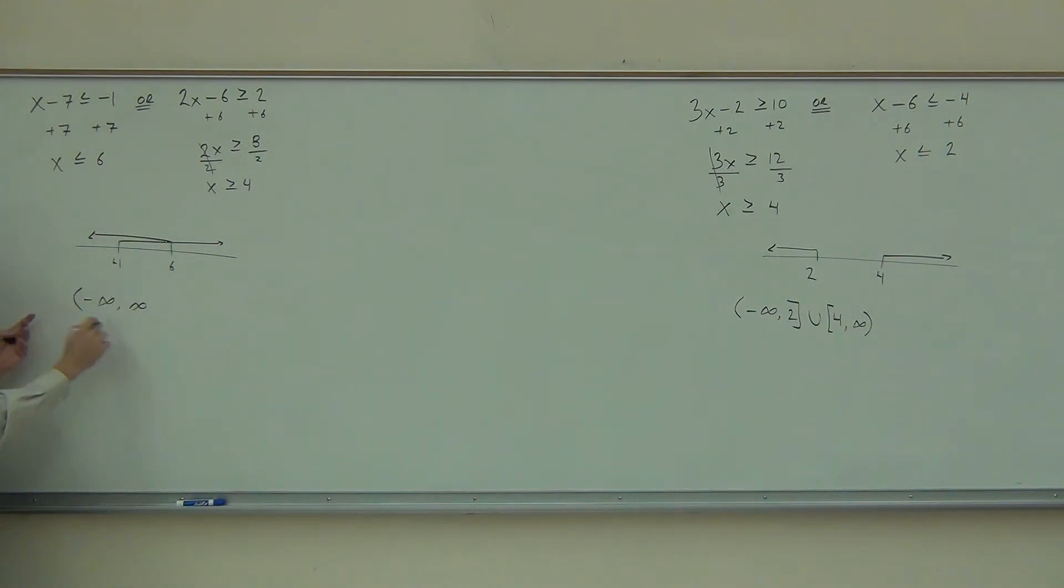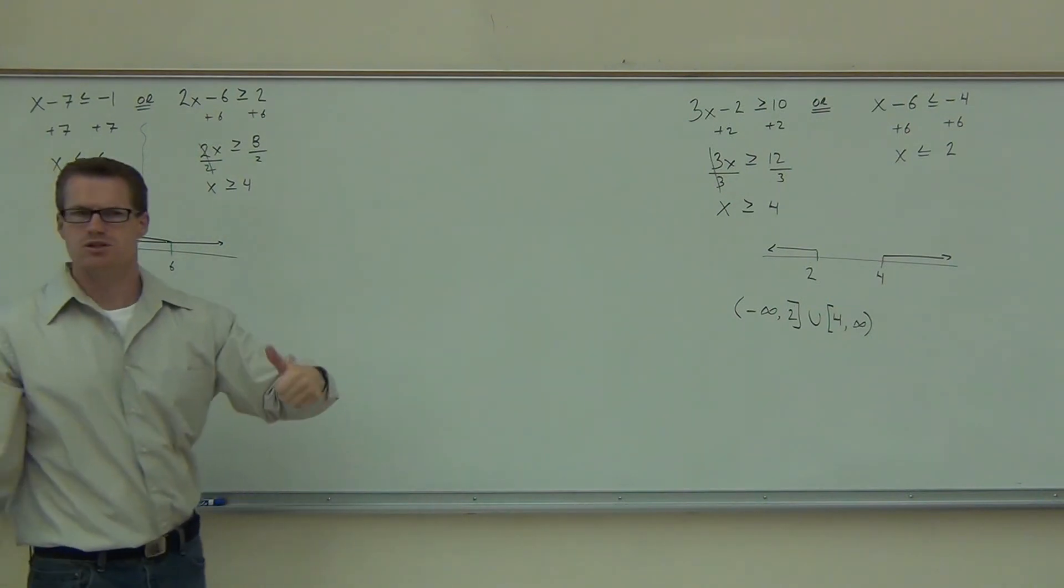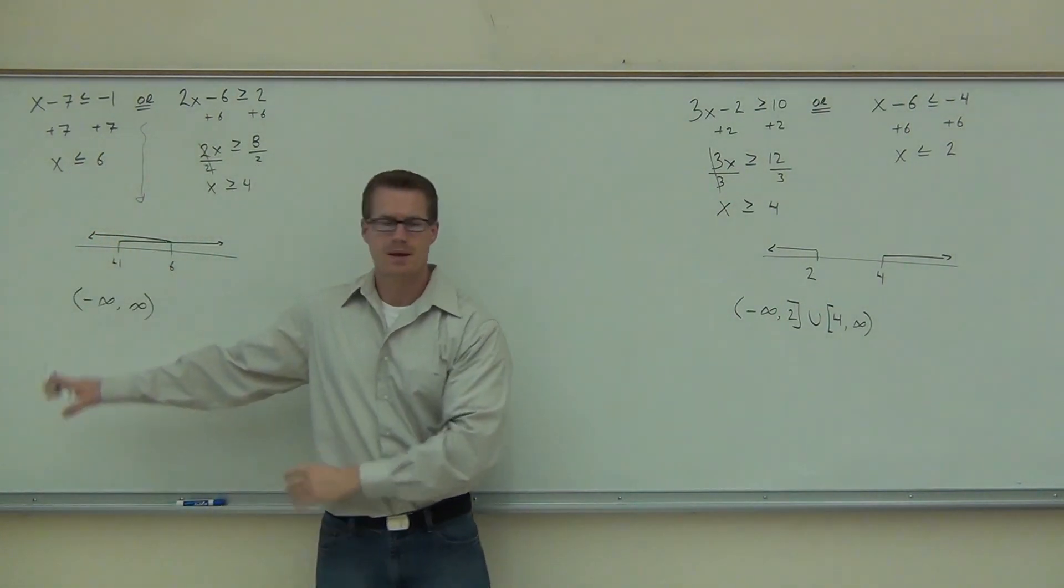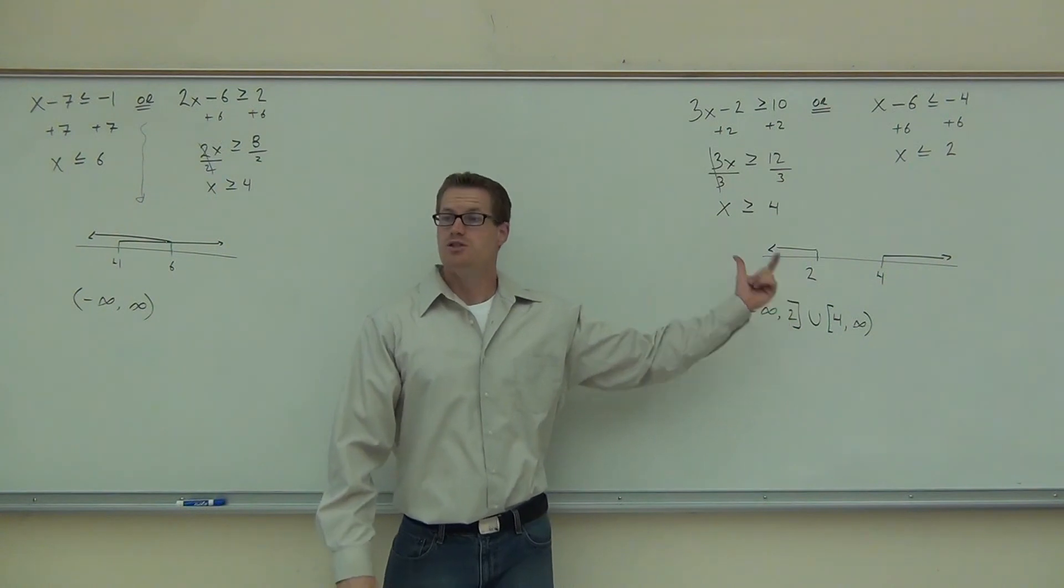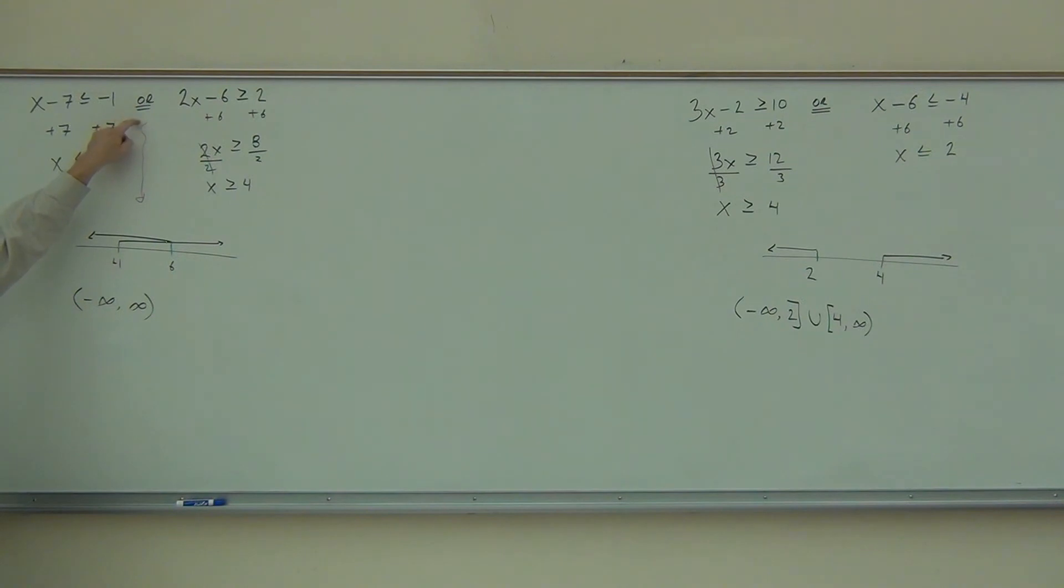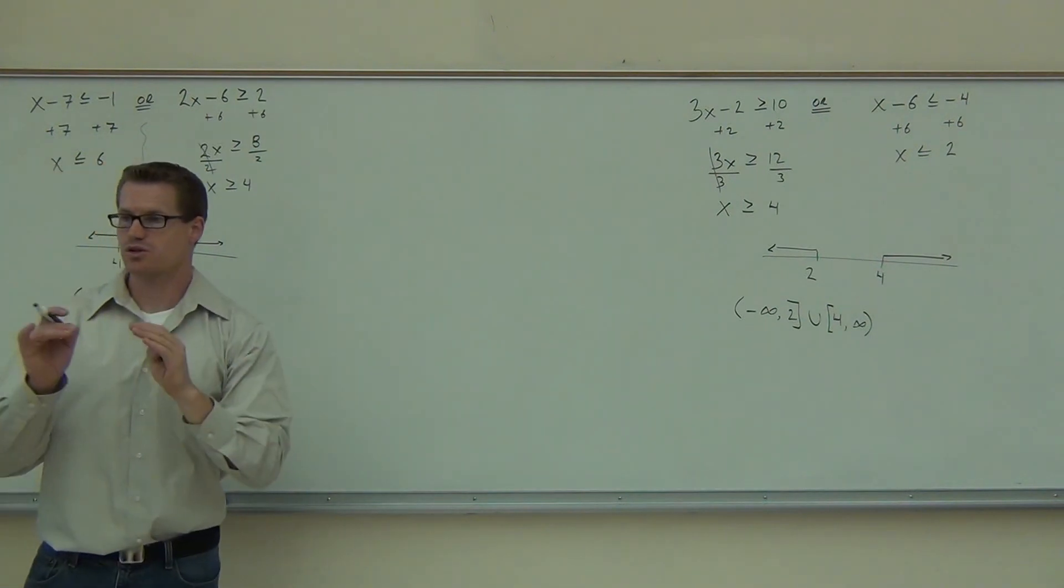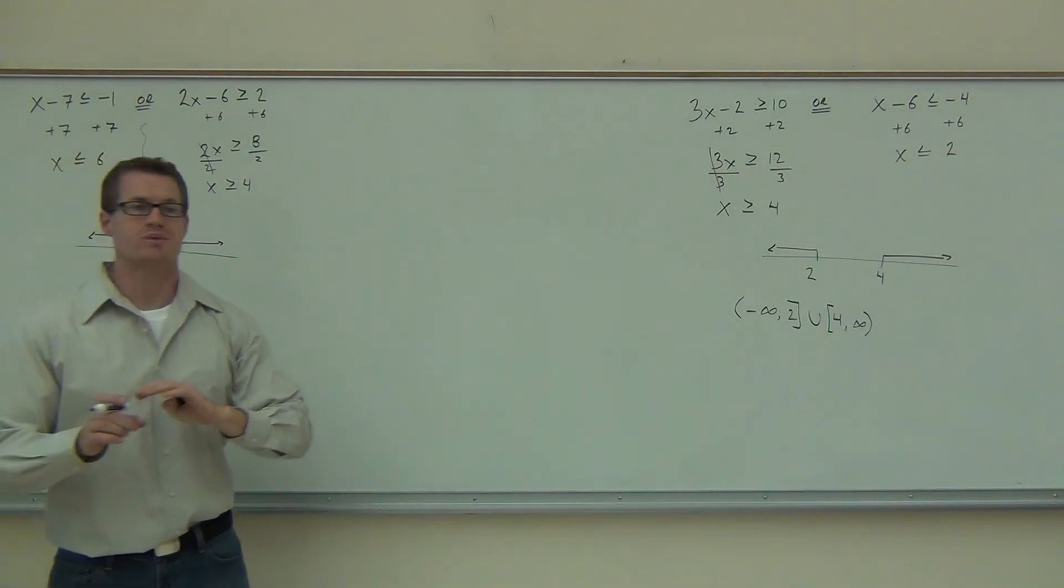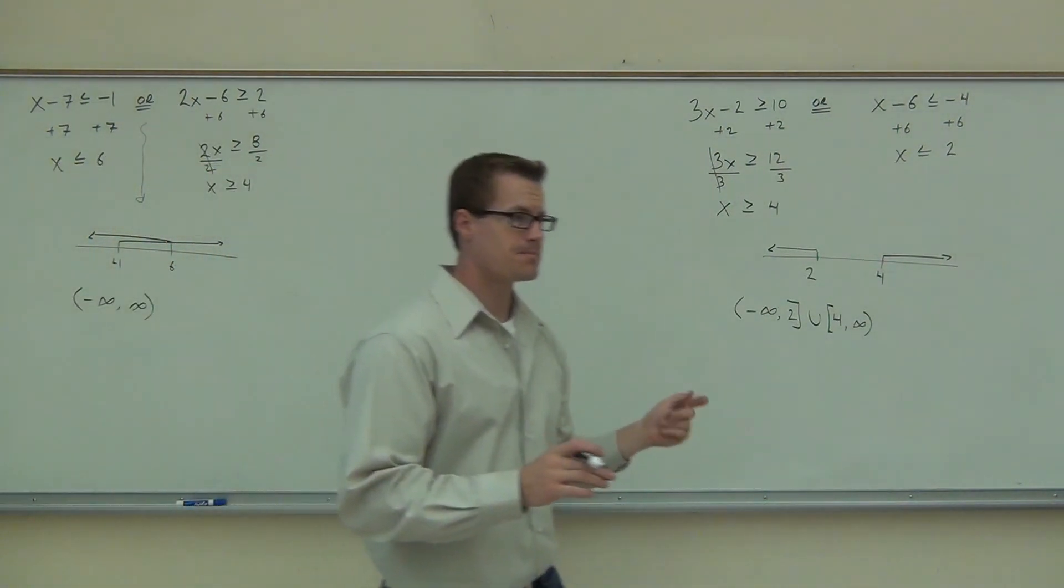This whole interval for union, for the union of this, the or, it means the whole thing. Negative infinity all the way to positive infinity. Do you see the difference between this problem and this problem? Do you see how if I had asked you for the and, I would be going from 4 to 6. That's the difference between and and or. And means where does it cross over? Or means just list me everything that happens, basically.